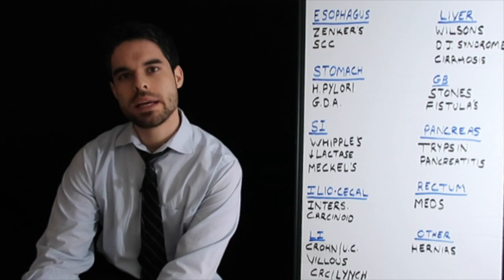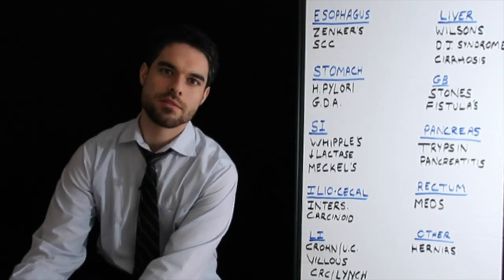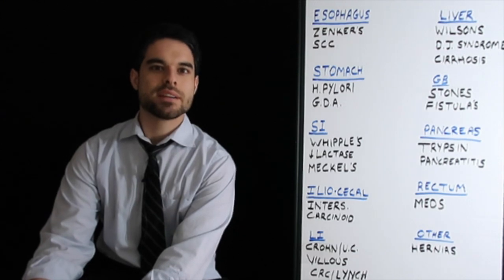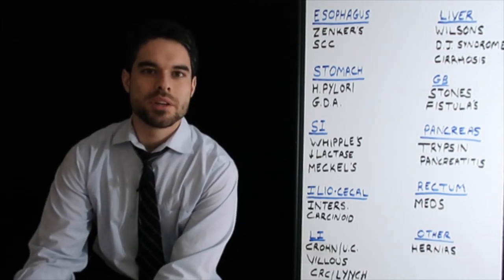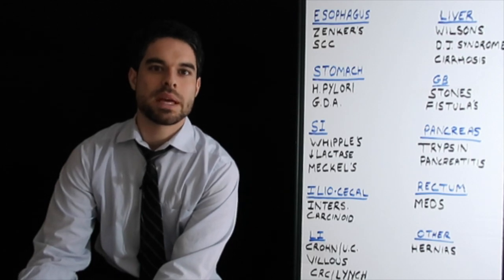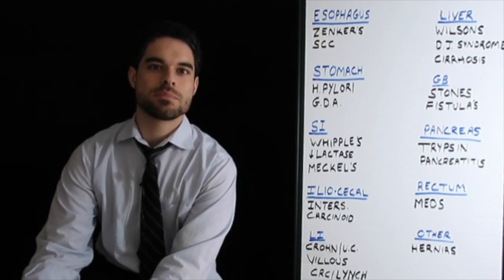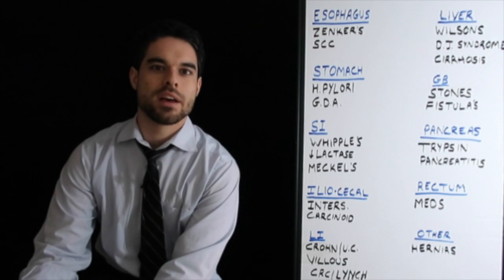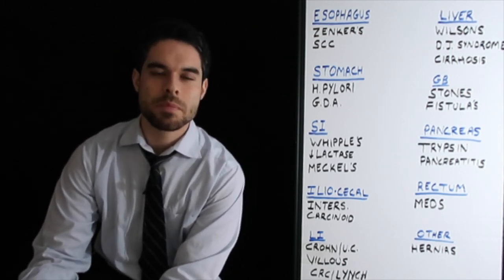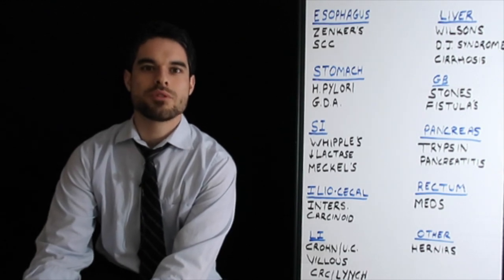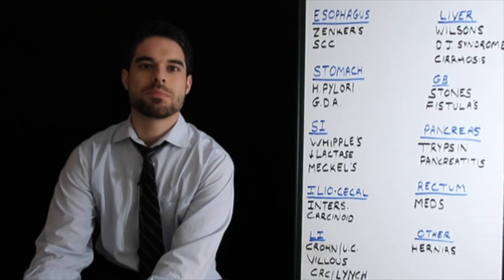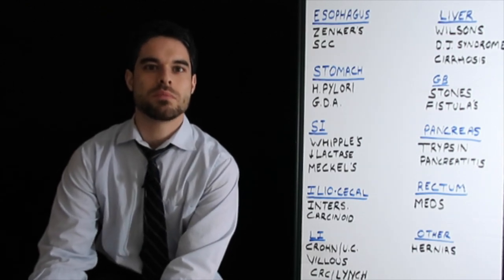In the stomach, H. pylori, it's called that because it's by the pyloric antrum. And so the pathophysiology there is that by the antrum you also have the D-cells and the D-cells usually inhibit gastrin. So if you have an H. pylori infection over there, you lose your D-cells, you can't inhibit gastrin and so you have too much acidity. Also the gastroduodenal artery is commonly tested and that would present with a posterior duodenal bleed.